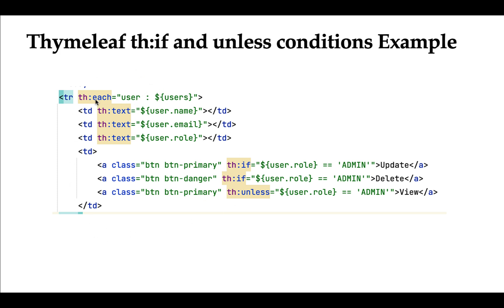Let's understand th:if and th:unless with an example. In this code snippet we are using th:each to iterate over a list of users, and using th:if and th:unless to display links based on a condition. If the user role equals admin, we print the update and delete links. th:unless means if the user is not admin, we print the view link instead.